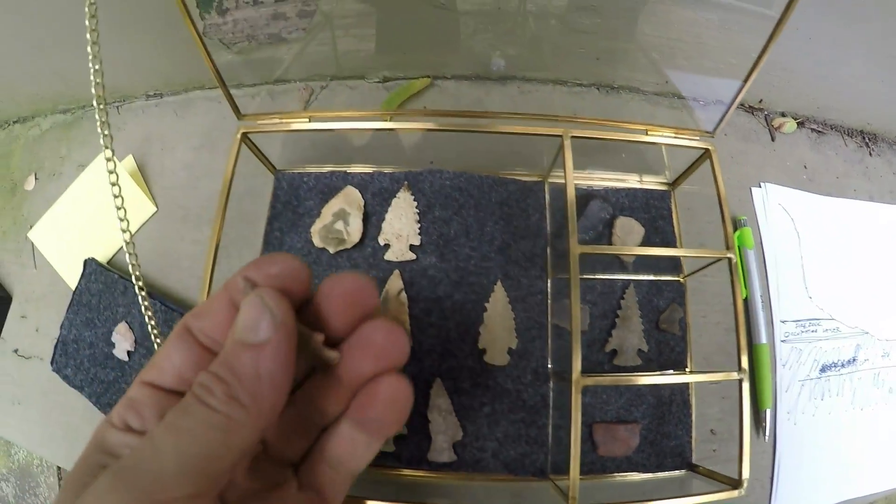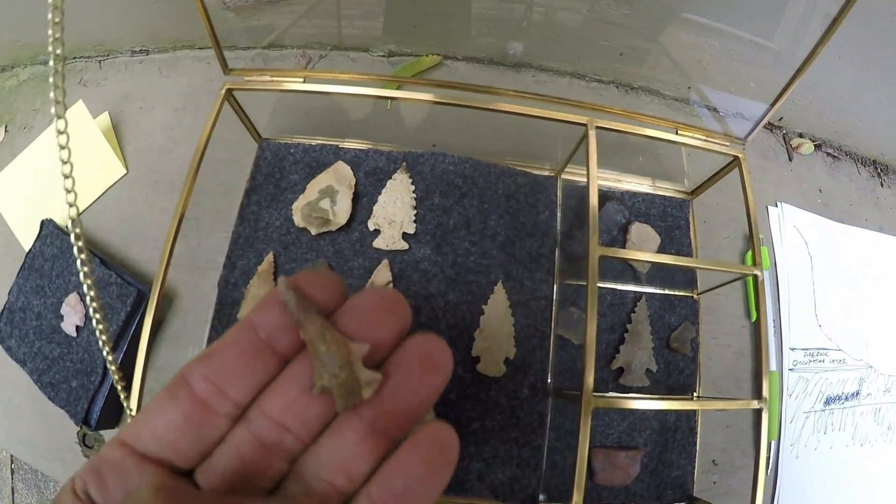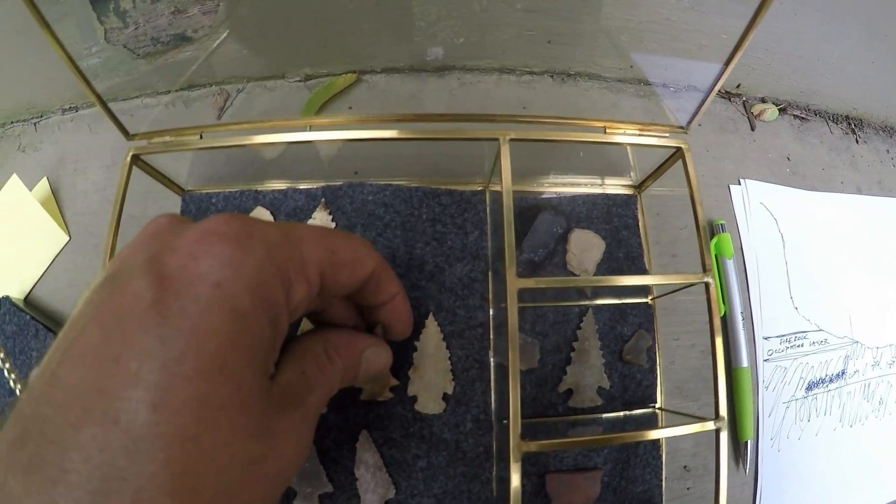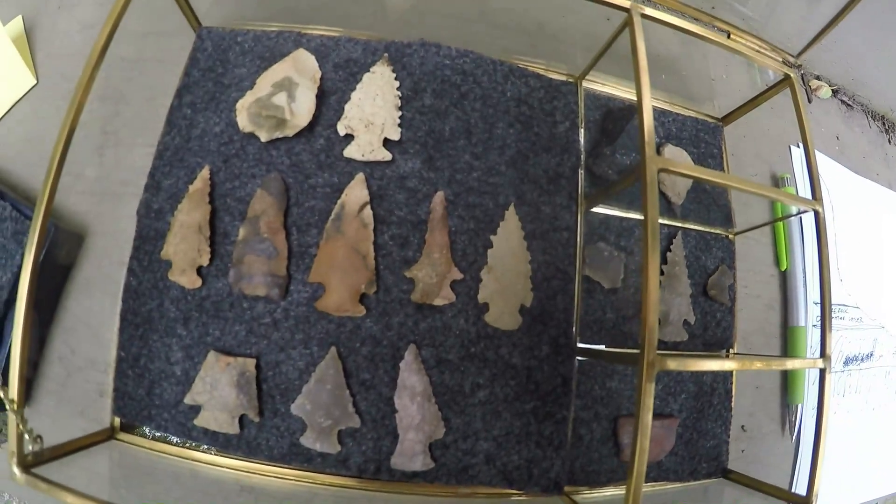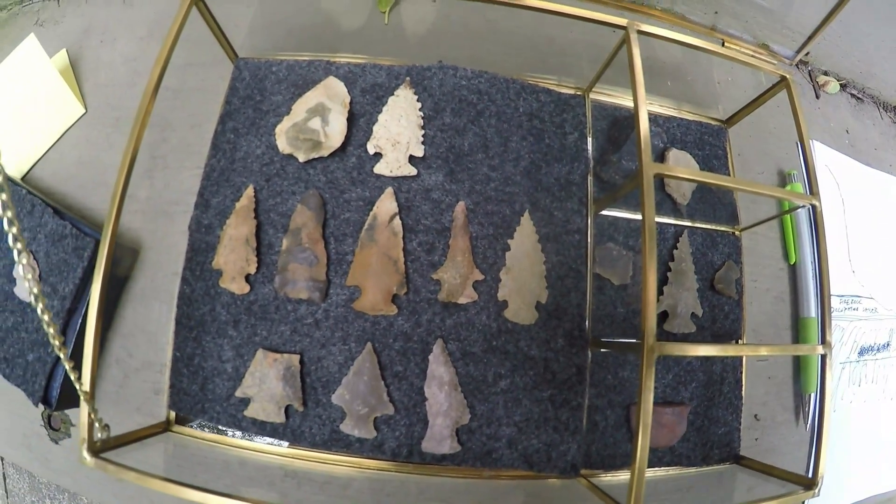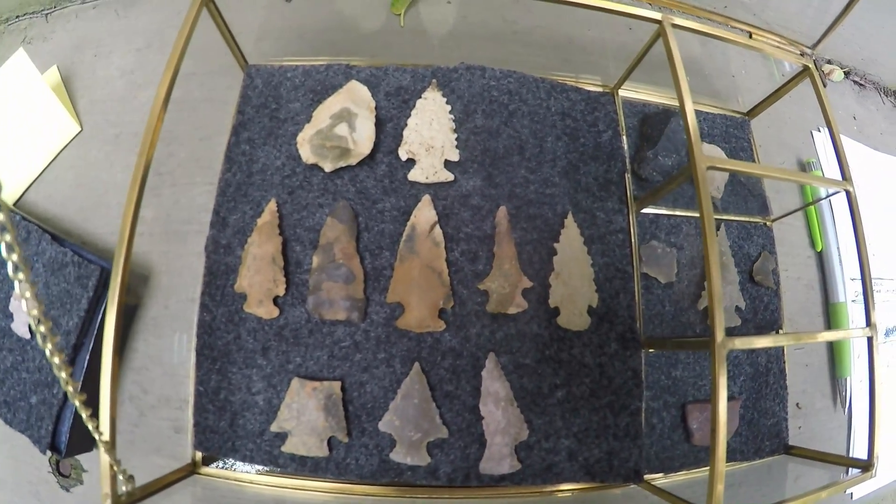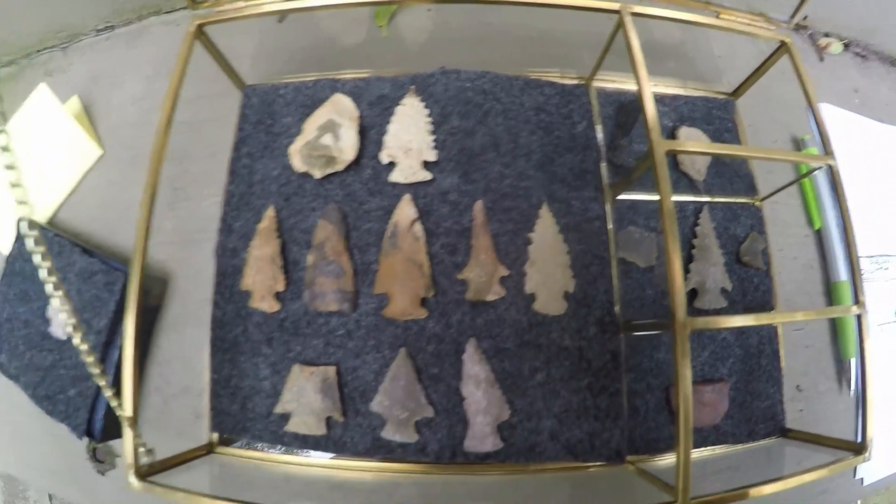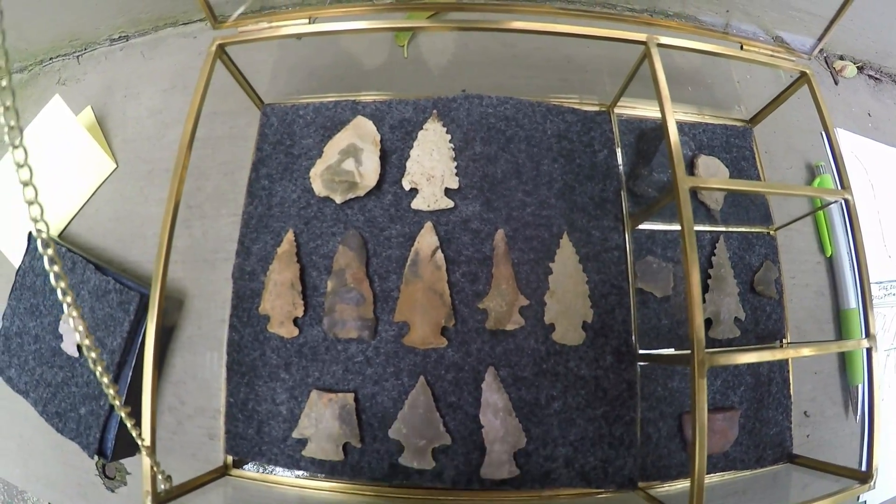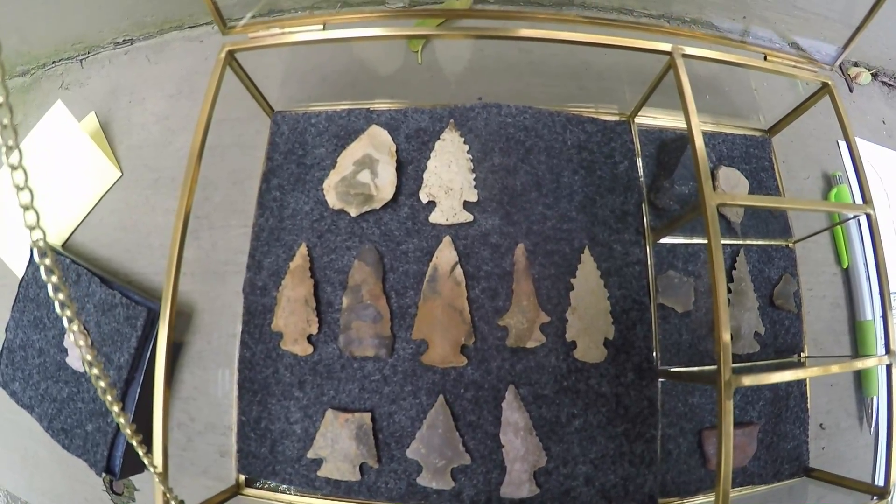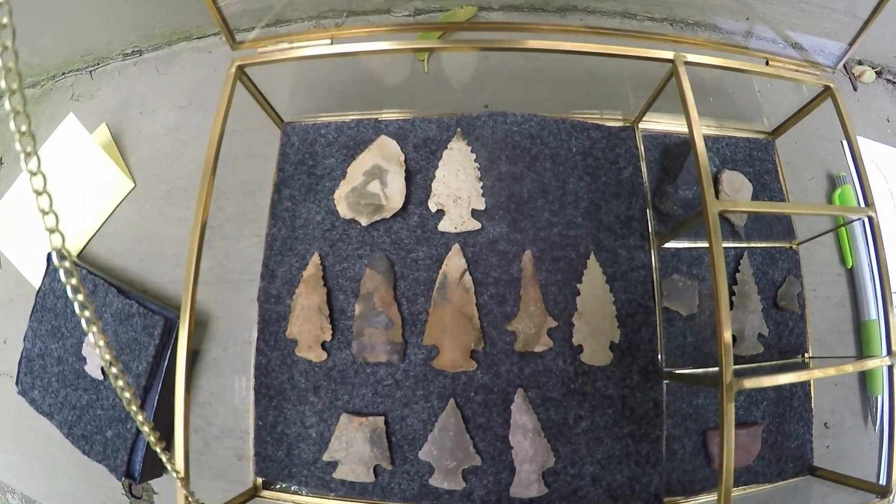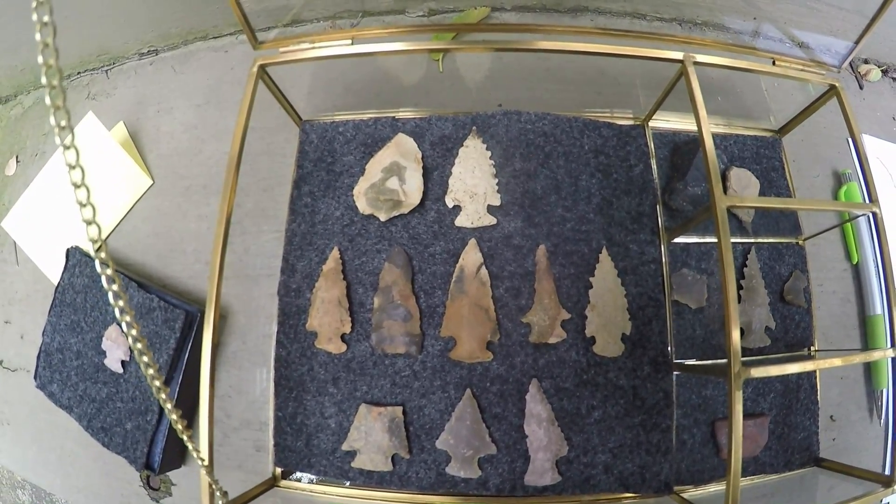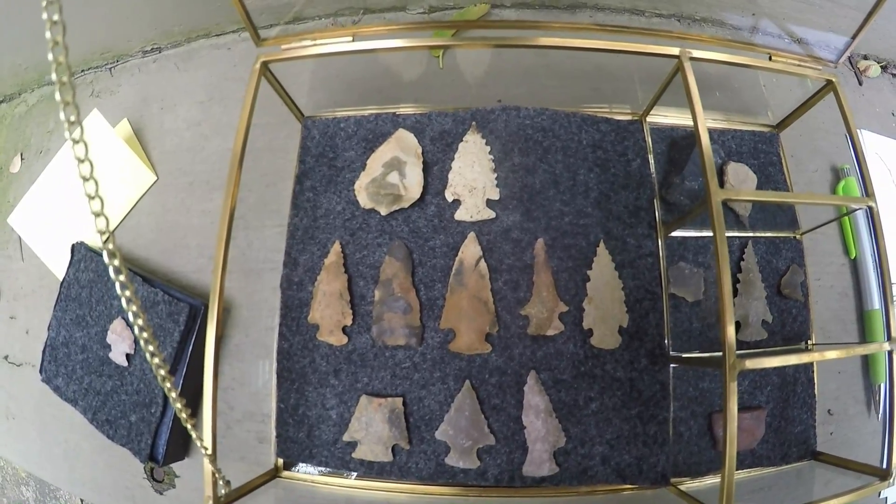And probably the find of the cache which makes this cache worth talking about is there was a paleo point in it, associated with these Amos points. And these are old points - Overstreet lists them at 8,900 before present to 9,900 and I think this site's even older from some of the stuff that's coming from it.